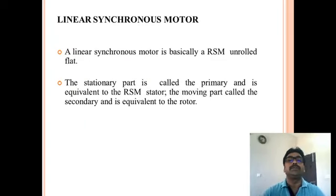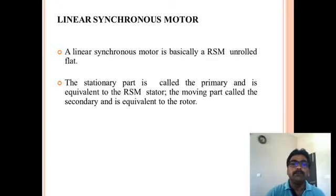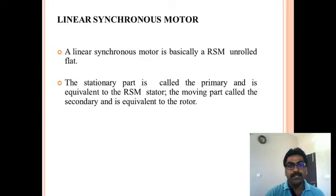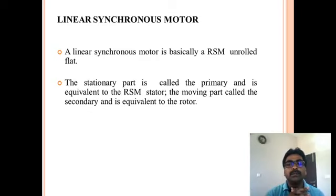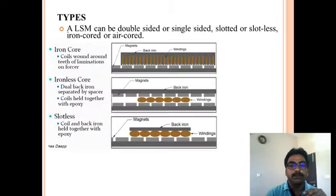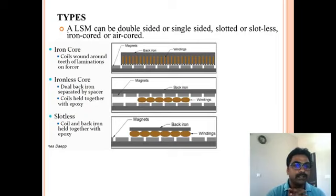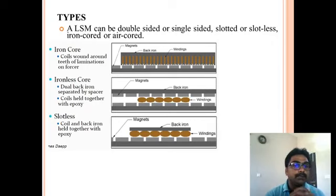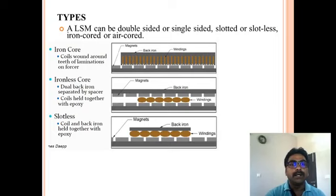Next we move on to the linear synchronous motor. A linear synchronous motor is basically a rotary synchronous motor unrolled flat, so the construction and operation remain the same, but it is laid flat for linear motion. The linear synchronous motor can be of slotted, slotless iron core, or ironless core and slotless types. The figures and points mentioned here give an overview of the iron core, ironless core, and slotless configurations.